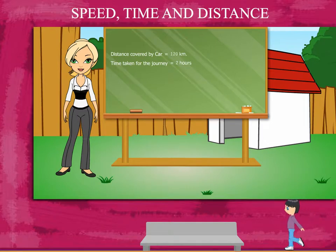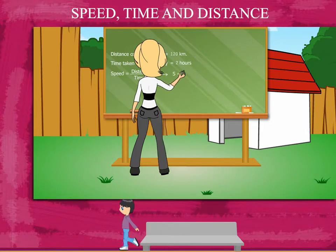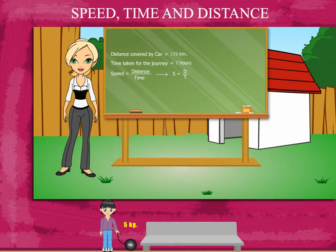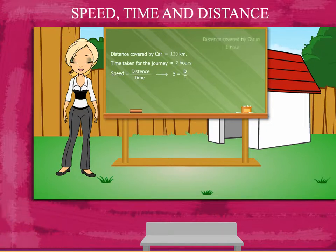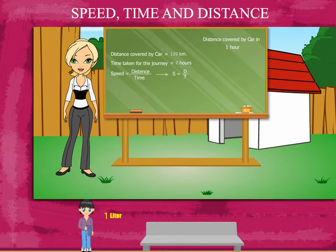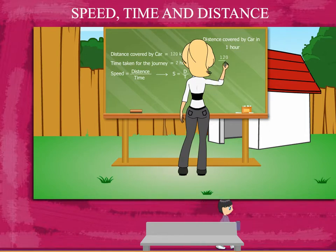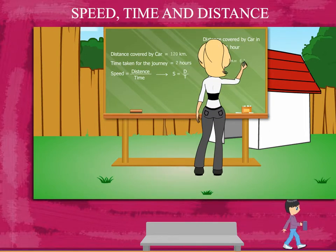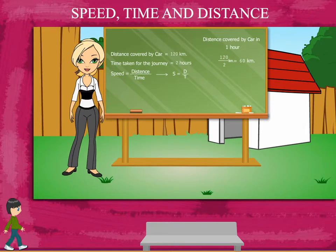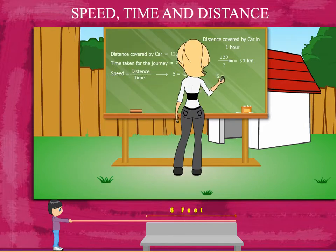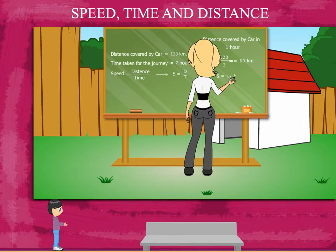So, speed of his car is distance divided by time, or d upon t. Rosie ma'am finds the distance covered in 1 hour, and this is the speed of the car. So, 120 km divided by 2 hours is 60. The speed of Judy's car is 60 km per hour.